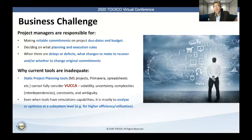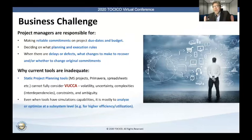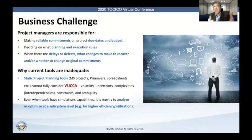Am I going to use waterfall? Am I going to use critical chain project management? Will I use agile or scrum or a combination? What's the best way of deciding that? I don't have the luxury of just trying on the next project and seeing how it goes — it's far too big a risk. And then of course, when things do go wrong — and they will — should I intervene? Should I change my commitments?